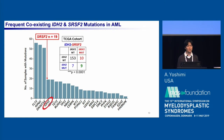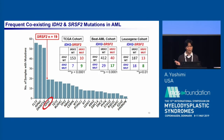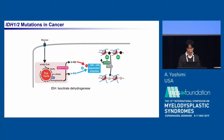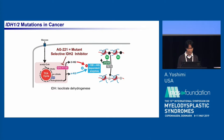Interestingly, about half of the SRSF2 mutant patients also had a coexisting IDH2 mutation with statistical significance, and these trends were also observed in the BeatAML and Leucegene cohorts. IDH, or isocitrate dehydrogenase, participates in the TCA cycle to convert isocitrate into alpha-ketoglutarate. Mutant IDH2 further produces an oncometabolite called 2-hydroxyglutarate, which competitively inhibits alpha-ketoglutarate-dependent enzymes including TET-family and Jumonji-family proteins, causing DNA hypermethylation and histone modification. We now have a mutant-selective IDH2 inhibitor.